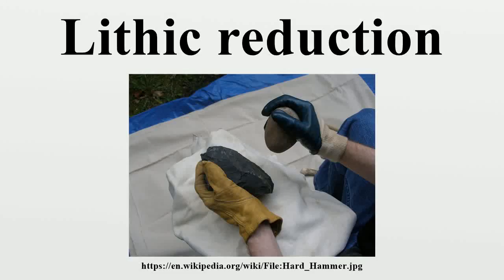Lithic reduction involves the use of a hard hammer percussor, such as a hammerstone, a soft hammer fabricator, or a wood or antler punch to detach lithic flakes from a lump of tool stone called a lithic core. As flakes are detached in sequence, the original mass of stone is reduced, hence the term for this process.